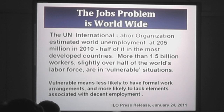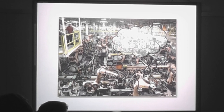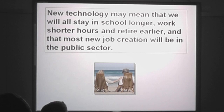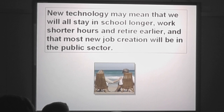How many workers can you count in this automated factory? It raises the question: who is the 99%? This change in technology may mean that we all need to stay in school longer, work shorter hours, retire earlier, and that most new job creation will be in the public sector — which is just the opposite of what the right wing is saying. The center is now pandering to the right on all of these things. The worst thing is elected officials who talk about jobs and haven't a clue.